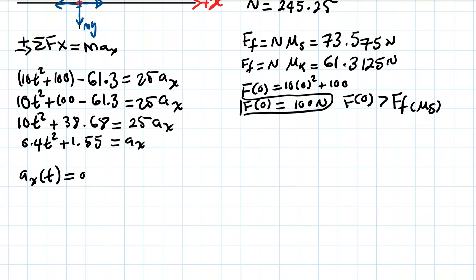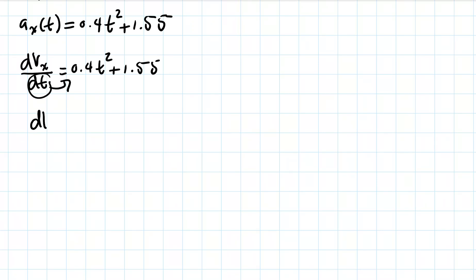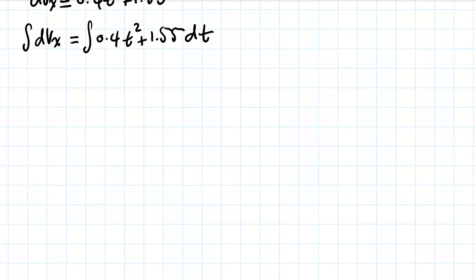Acceleration is the change in velocity over time: dv/dt = 0.4t² + 1.55. Rearranging gives dv = (0.4t² + 1.55) dt. We integrate both sides from t = 0 to t = 4 seconds.